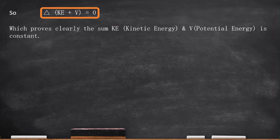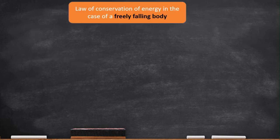And which proves the law of conservation of energy. Now, let us prove it in the case of a freely falling body. We take the object at one particular height, and then we will allow it to fall, and then we will calculate the mechanical energy at three different positions.